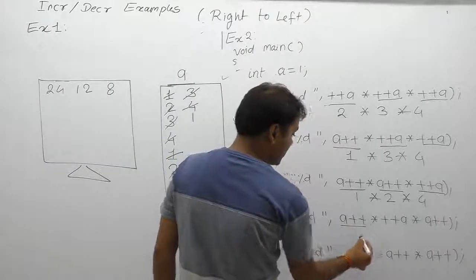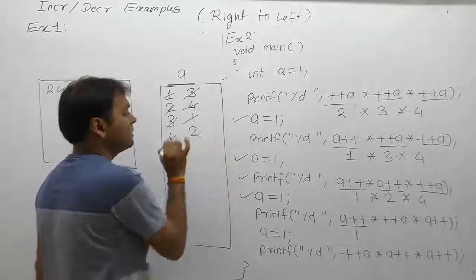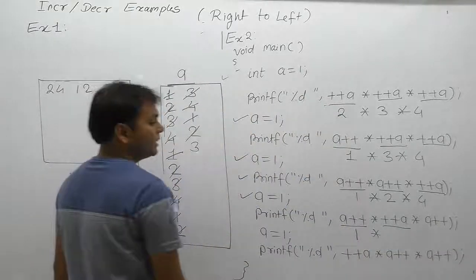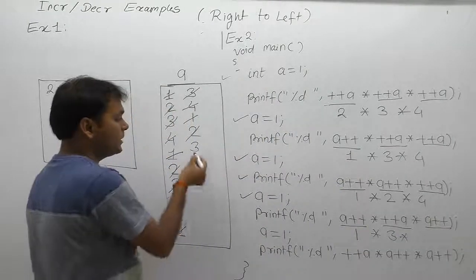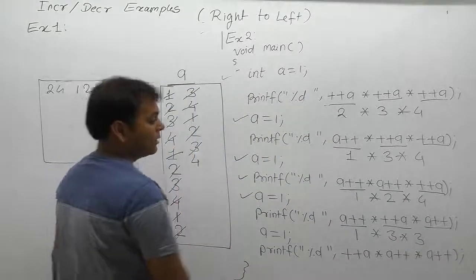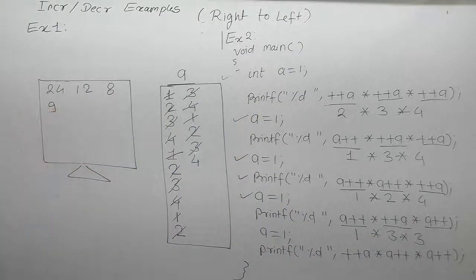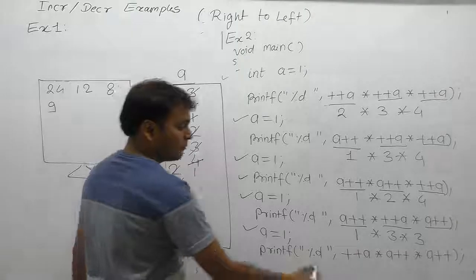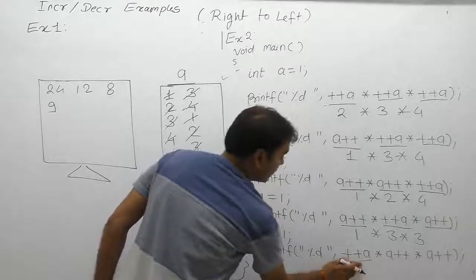Again a is initialized by 1. Post-post — replacement first: replace with 1, immediately increment — a becomes 2. Next pre-pre-pre — increment then replacement. After all operations, a becomes 4. The result of that expression is 9. Therefore 9 is printed by the next printf.